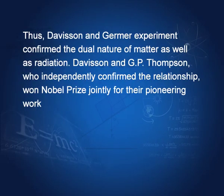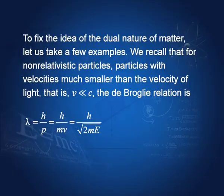Davisson and G. P. Thompson, who independently confirmed the relationship — G. P. Thompson was working in England and independently performed this experiment — both of them won the Nobel Prize. To fix the ideas of the dual nature of matter, let us take a few examples.